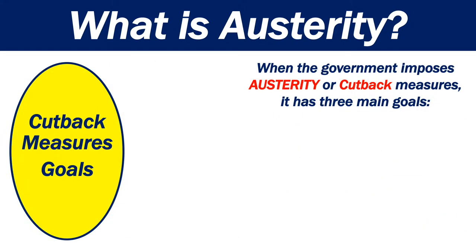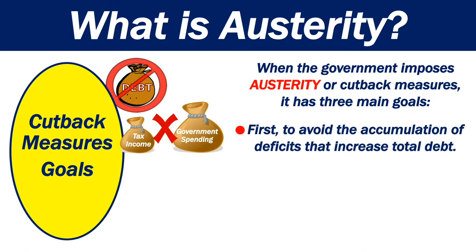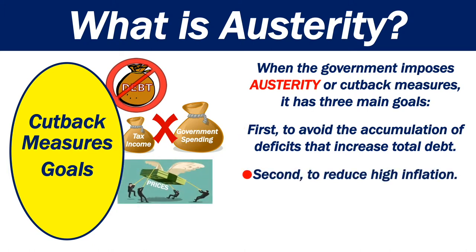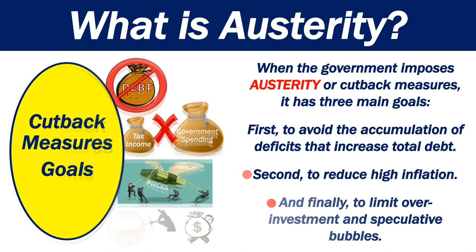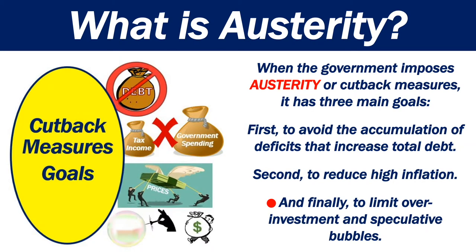When the government imposes austerity or cutback measures, it has three main goals. First, to avoid the accumulation of deficits that increase total debt. Second, to reduce high inflation. And finally, to limit over-investment and speculative bubbles.